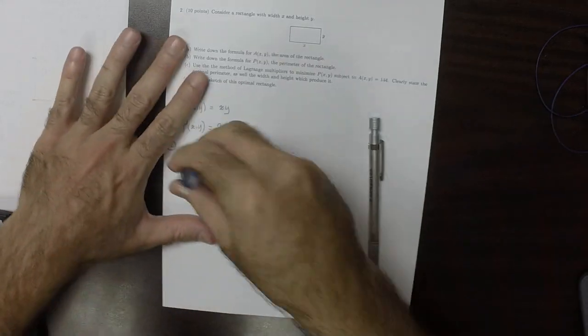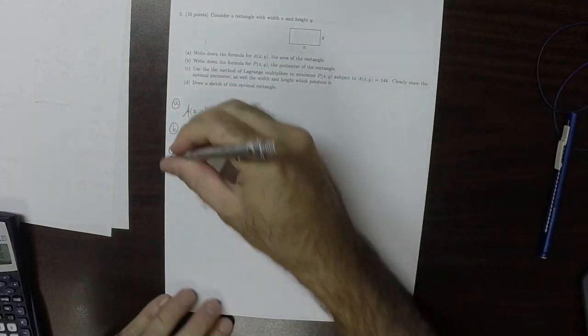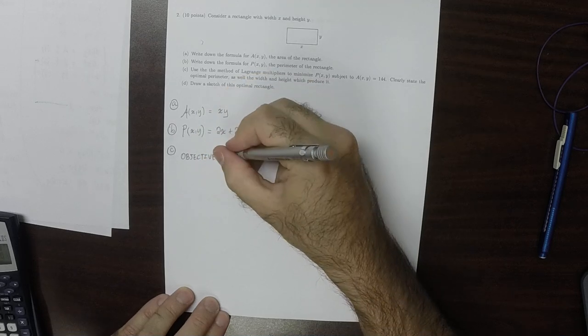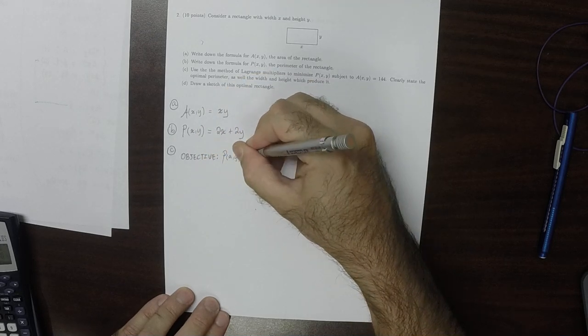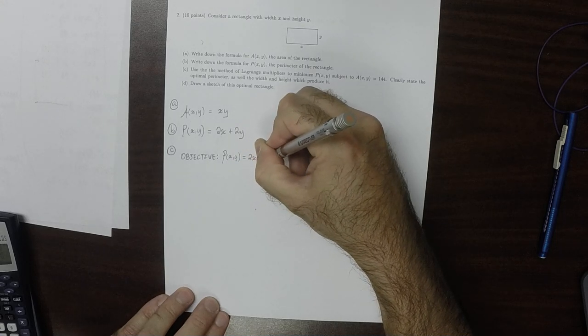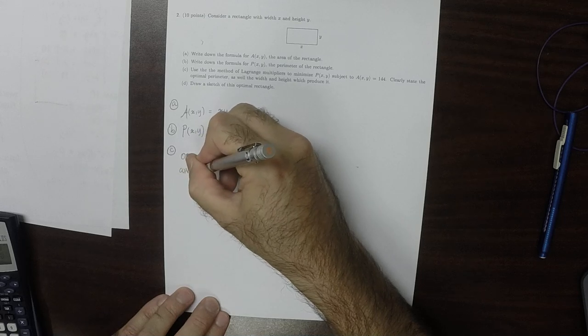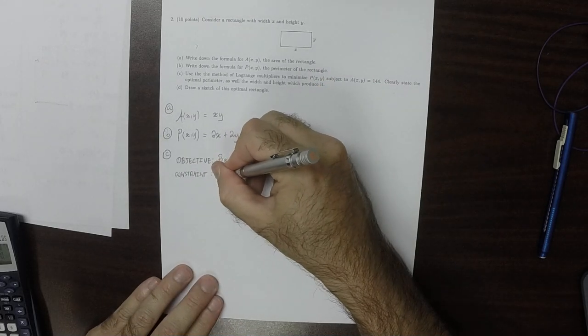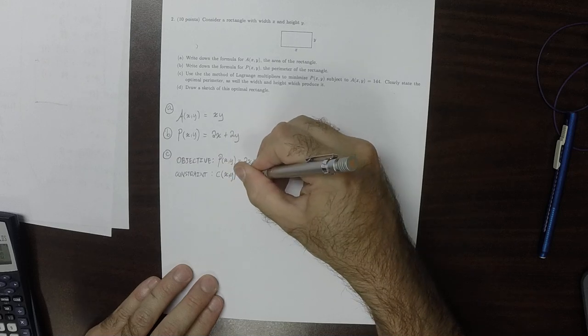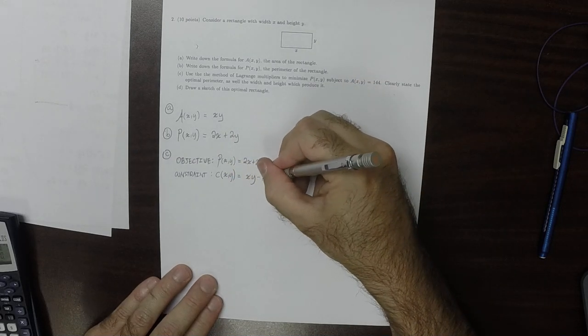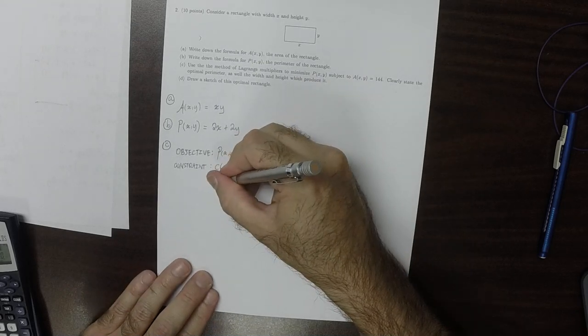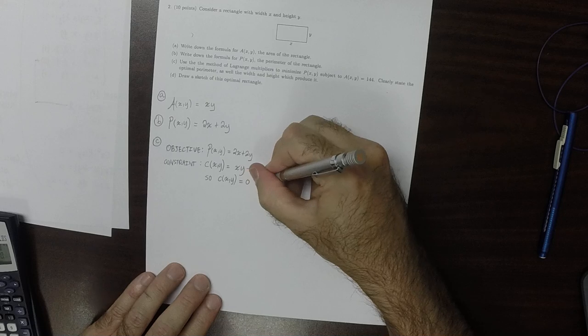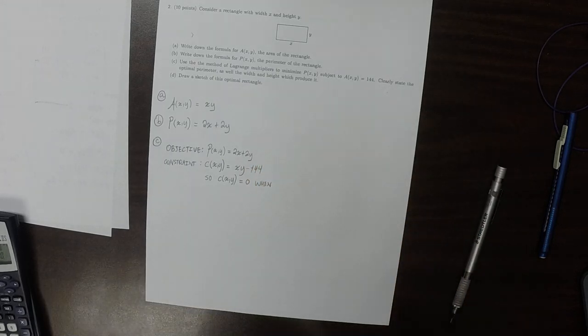The objective function is P of x and y equal to 2x plus 2y. The constraint I'll call C of x and y is xy minus 144, so that the constraint is equal to zero.